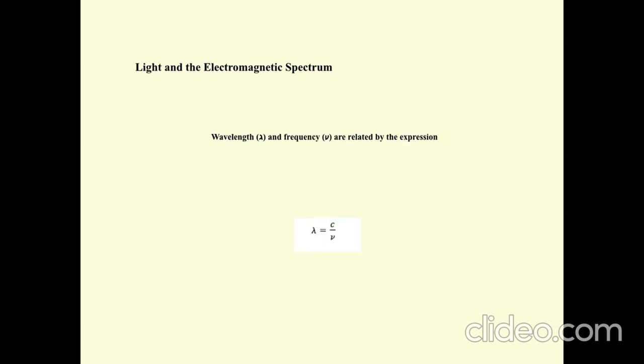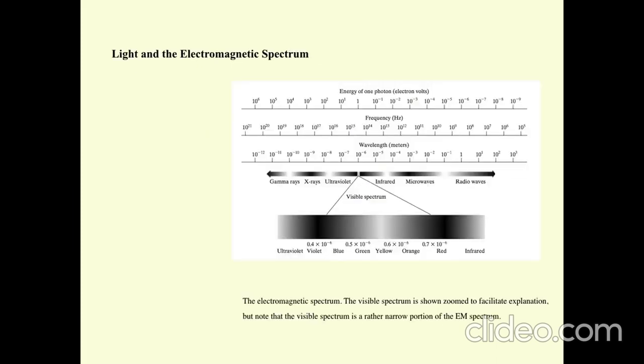Light and the electromagnetic spectrum. This is shown in the figure. The electromagnetic spectrum is shown. The visible spectrum is shown zoomed to facilitate explanation, but note that the visible spectrum is a rather narrow portion in the total EM spectrum.